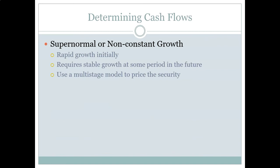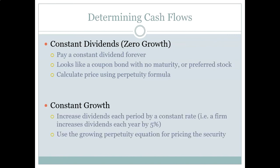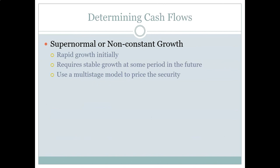The last case is what's called super normal or non-constant growth, or two-stage growth, where we allow these first two stages to co-mingle. A firm might have different dividend regimes at different periods of time. As long as we can identify the two different regimes and the second regime is constant or constantly growing, we can use a multi-stage model to calculate the present value of those dividends. We'll jump to a quick example to show in more detail what these dividend regimes look like and how we price them.